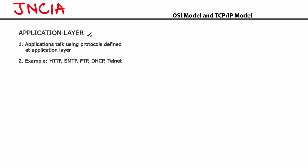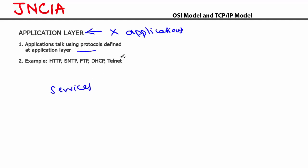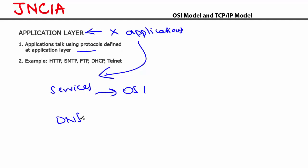Let's look at the application layer. As discussed earlier, the application layer does not represent the applications on your computer. The application layer only provides protocols or services that allow the applications to interface with the OSI model. Well-known protocols that operate at the application layer include HTTP, SMTP, FTP, DHCP, and DNS. That's about the seven layers of the OSI model.